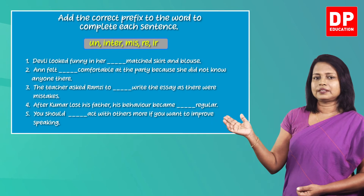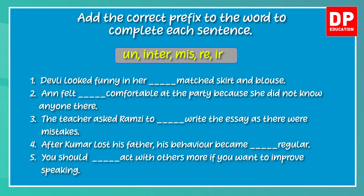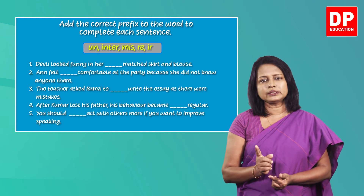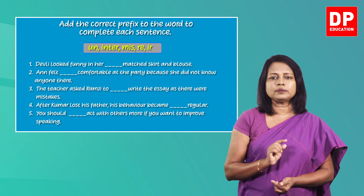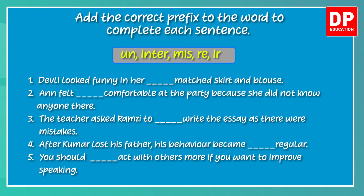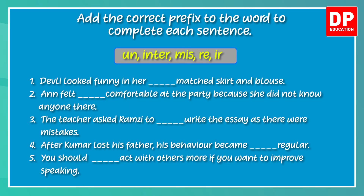Before we learn more about suffixes, let's do an activity using prefixes. There are five sentences with blanks. You have to add the correct prefix to the words to complete the sentences. Use the prefixes given in the box. You can pause the video and do it now. Let's see how you have done it. Look at the first one: 'Devli looked funny in her mismatched skirt and blouse.' You have to write 'mis' in the first blank because it is the opposite of 'matched'.